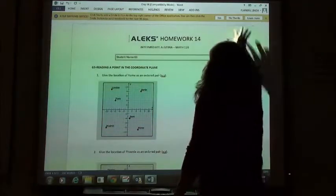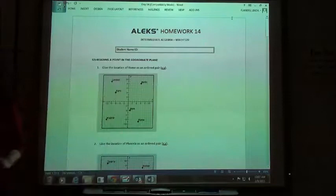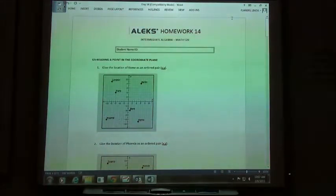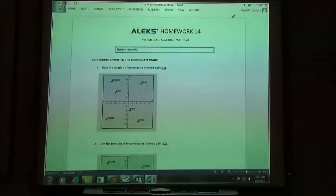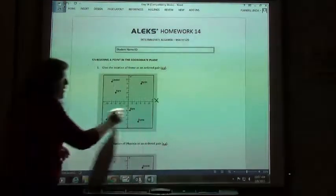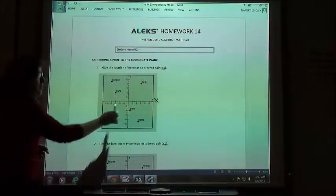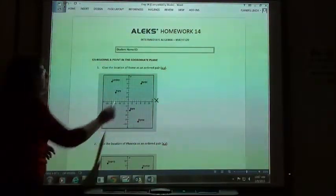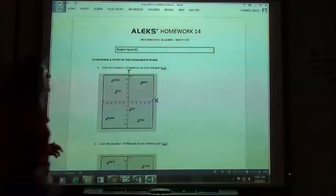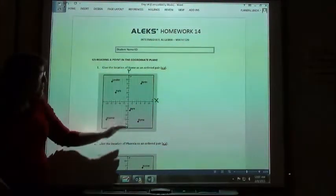Homework 14 starts out with understanding the coordinate plane. When they say coordinate plane, that's just a fancy word for the graph. You have your x-axis, which is horizontal. Zero's in the middle, and just like the number line, positive goes to the right, negative goes to the left. Then you have your y-axis, which goes up and down. Positive numbers go up, negative numbers go down.